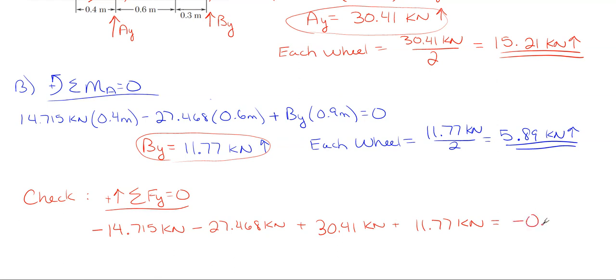Well, nothing really, because that is really close to zero. The only reason it is not zero is because we had rounding—we rounded off our answers, so that's why it's not exactly zero. That is super close to zero, so that is good enough. Now, if you wanted to get exactly zero for that check, you would just go back and get Ay to the exact decimal point and By to the exact decimal point. But 0.003 when my answers are 30 and 11—0.003 over 11.77 is a very small percentage. So that is good enough.